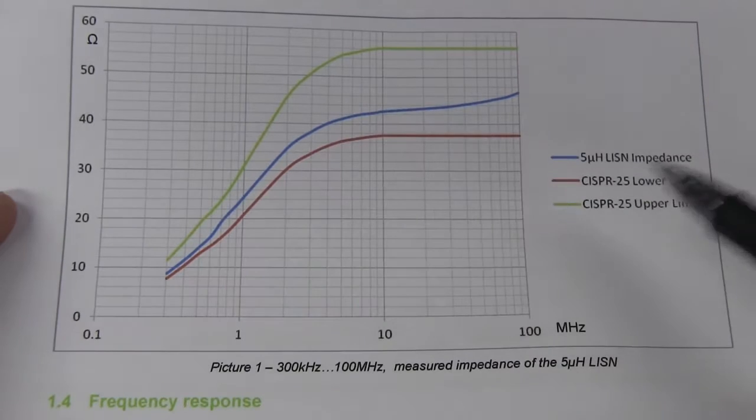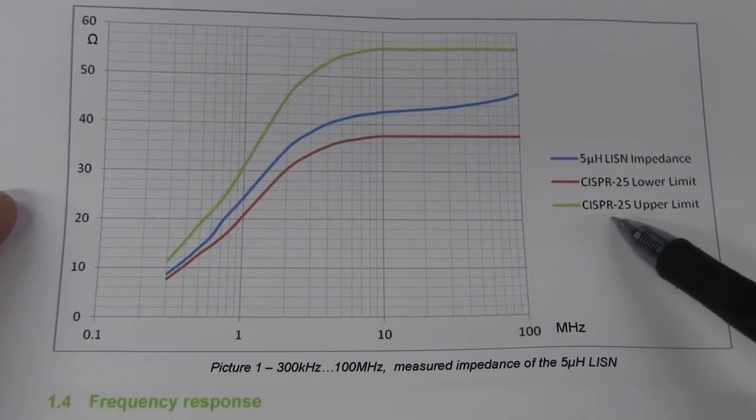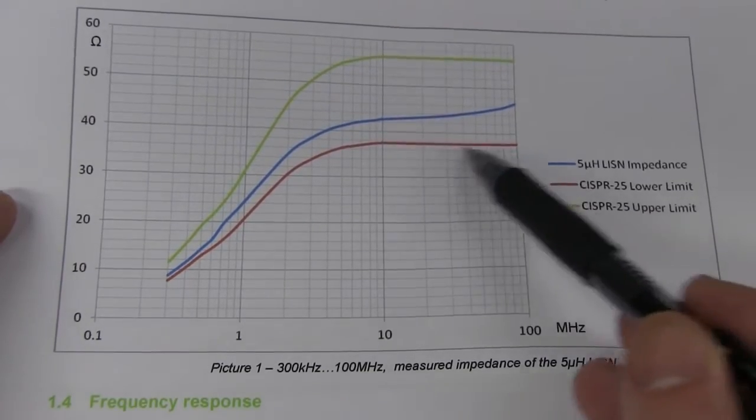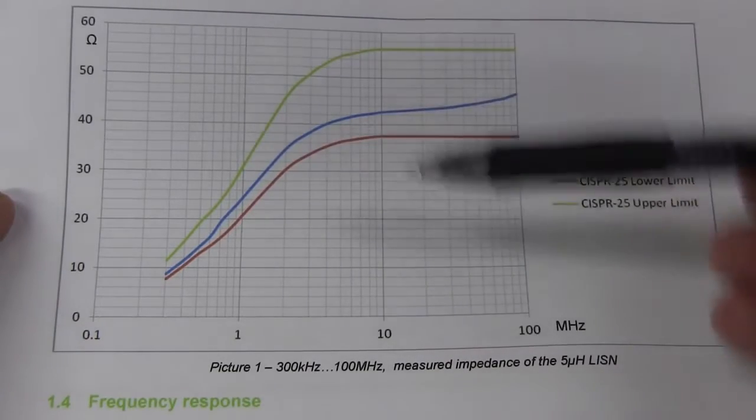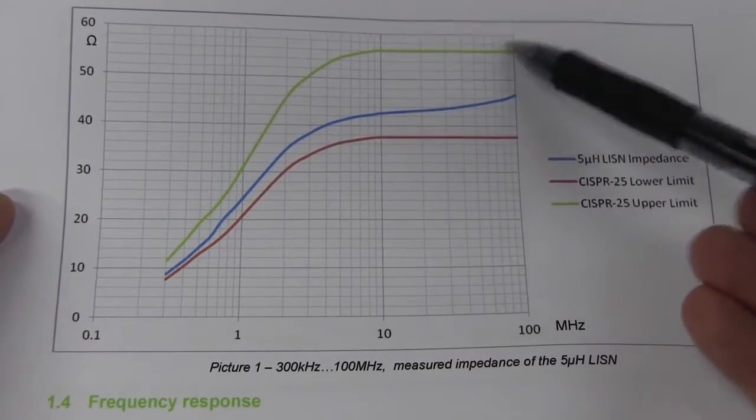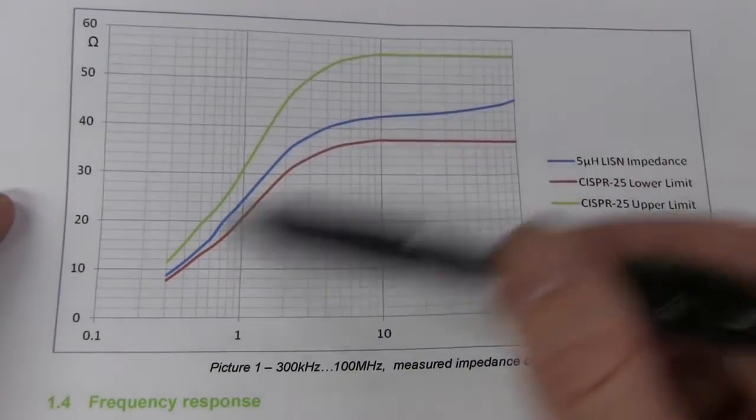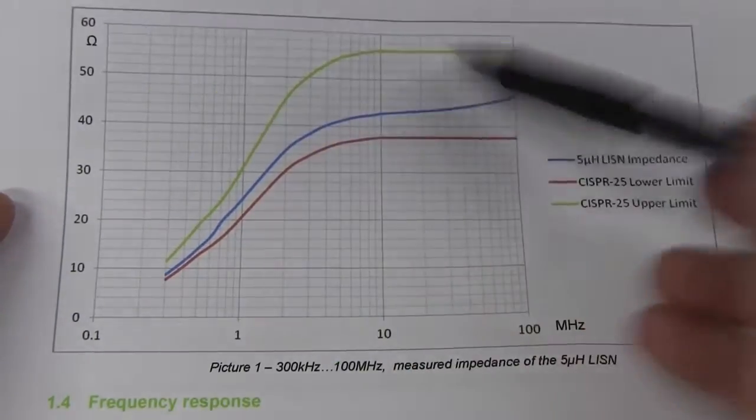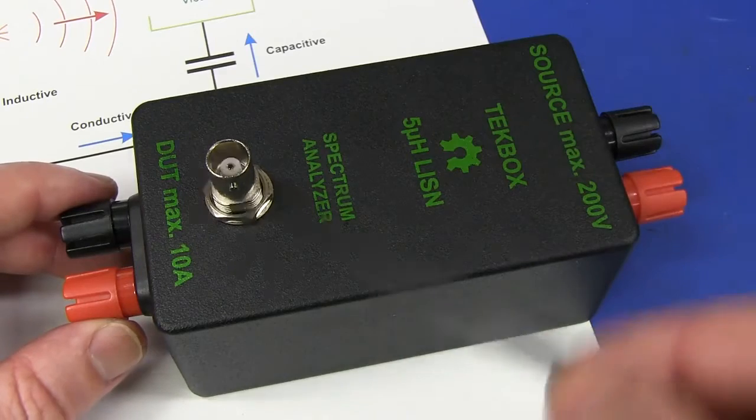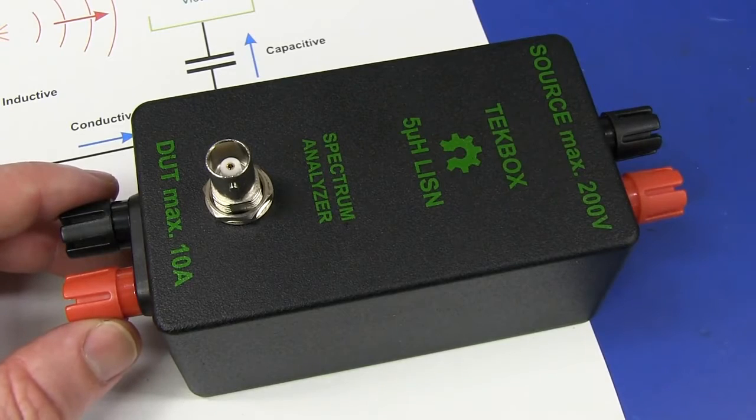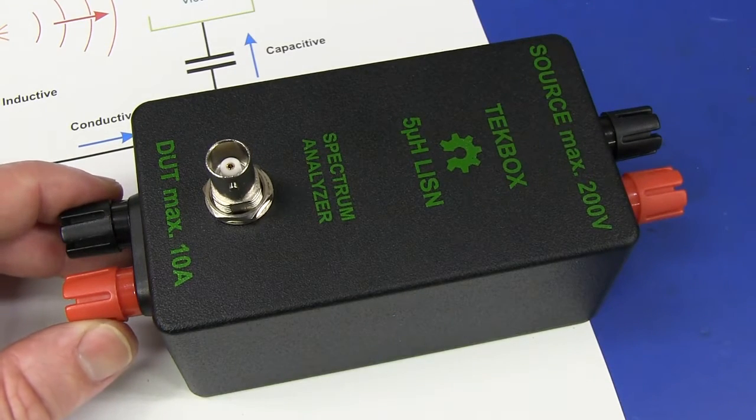And there are various standards for these line impedance stabilization networks. One of them is the CISPA standard here. And you can see that the standard actually provides what the impedance of this listen network is supposed to be. Here's the upper and lower limits and you can see this one is actually designed to fit fairly much in the middle of that. So this one actually meets the requirements. So having a standards compliant listen box like this is absolutely essential for any conductive emissions pre-compliance testing.